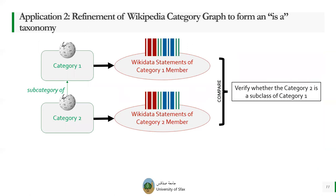Let's now move to the second application. The second application is the refinement of the Wikipedia category graph to form an IS-A taxonomy. Our team has worked on developing an IS-A taxonomy for driving semantic applications, particularly semantic similarity measures, achieving a high rate of accuracy. However, we encountered the problem of how to recognize if the subcategory-of relations between categories are just subclass-of statements, or relations such as main subject statements.